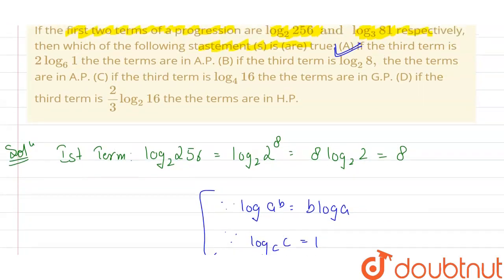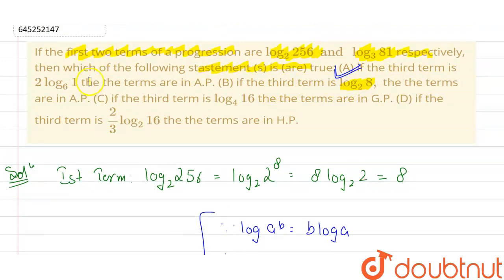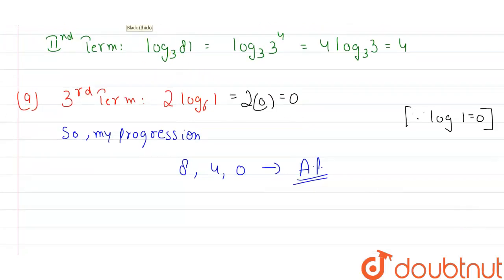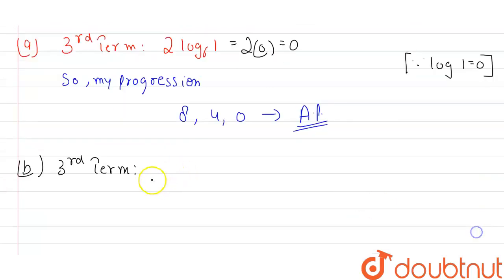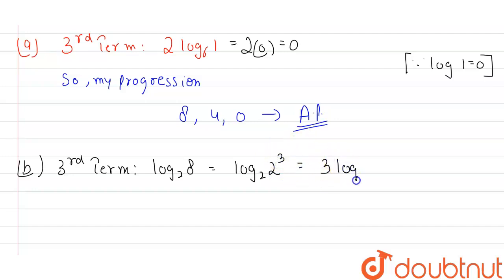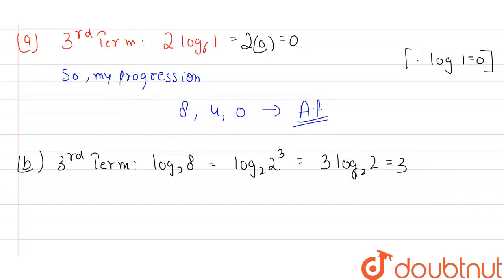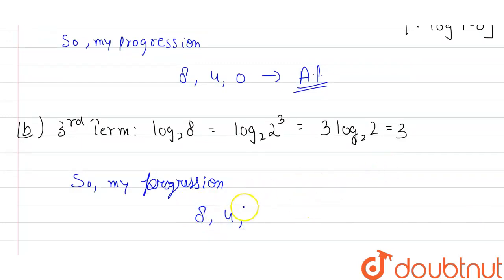Option B says: if the third term is log base 2 of 8, the terms are in AP. Log base 2 of 8 = log base 2 of 2³ = 3·log base 2 of 2 = 3. The progression would be 8, 4, 3. Since 8, 4, 3 are not in AP, option B is wrong.